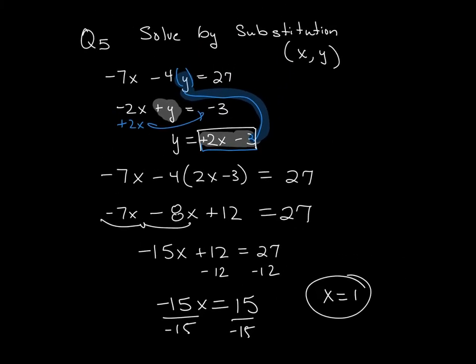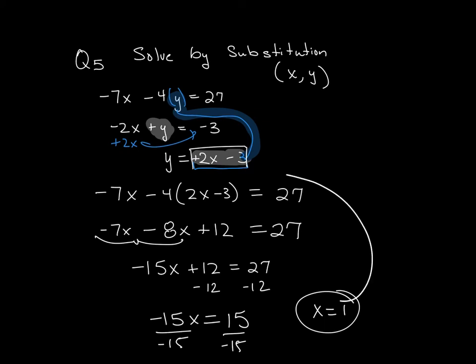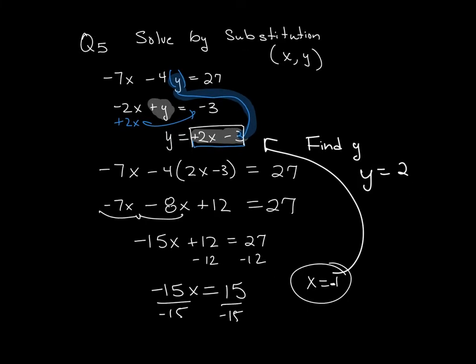Now, that's not done. We have to go back up to the beginning and find what y is. So replace it. y = 2 times -1 minus 3. So that's going to be 2 times -1 minus 3, so y = -2 - 3, and my y value is -5. So my ordered pair solution is (-1, -5).